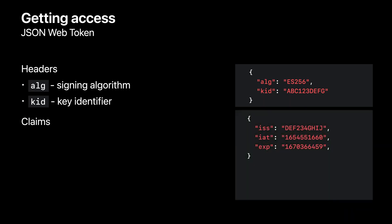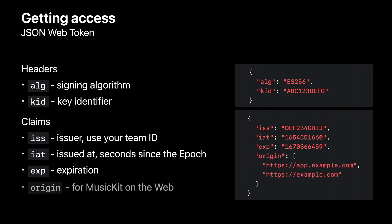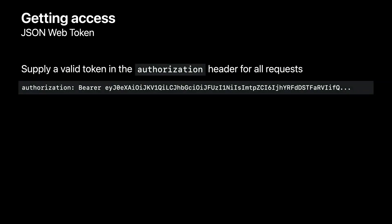The second part of the token is claims. Apple Music API has three required claims. Issuer ID, ISS, which is your team ID that can be found in the membership section of the Apple Developer Portal. Issued at time, IAT, which is represented by the number of seconds since the epoch. And an expiration time, EXP. This is in the same time format as the issued time. Tokens can be generated to expire a maximum of six months from when they were issued. For web applications, we encourage providing an origin claim, which will issue a token valid for your website only. A valid signed token must be supplied in the authorization header for all requests to Apple Music API. With the MusicKit service enabled for your applications on Apple platforms, this will be done automatically. MusicKit on the web must be configured with a token you generate to make requests to Apple Music API. More information about generating JSON web tokens can be found in the Apple Music API documentation.